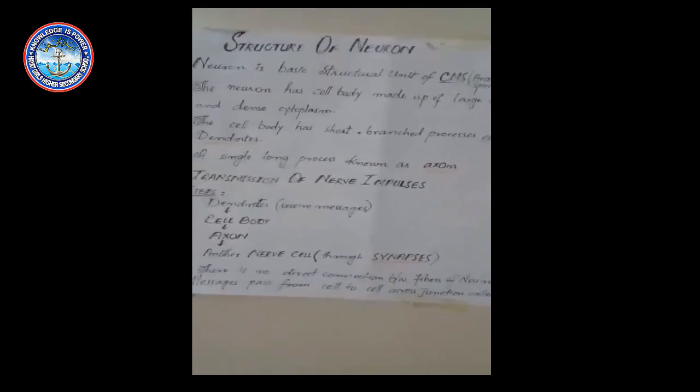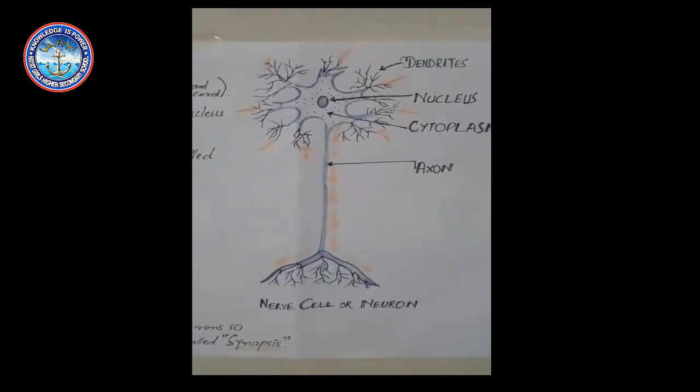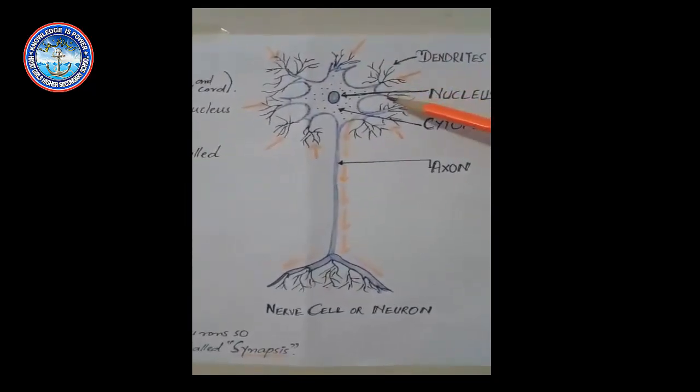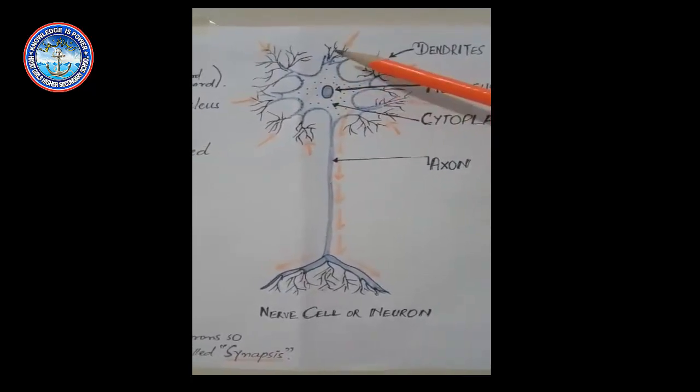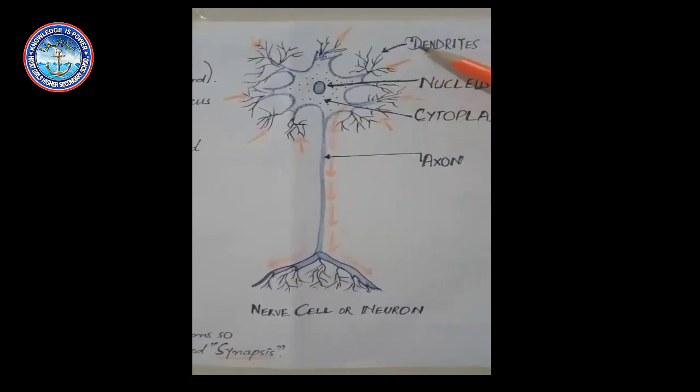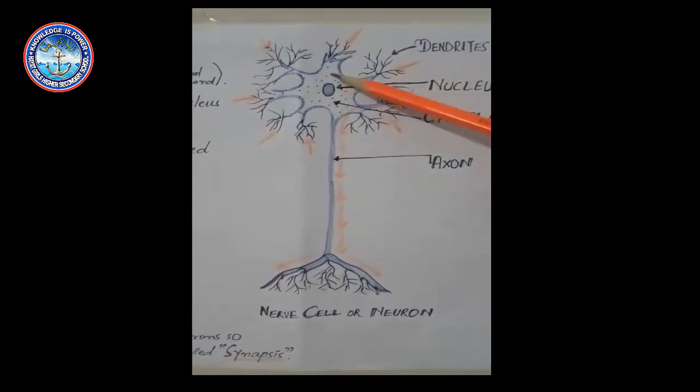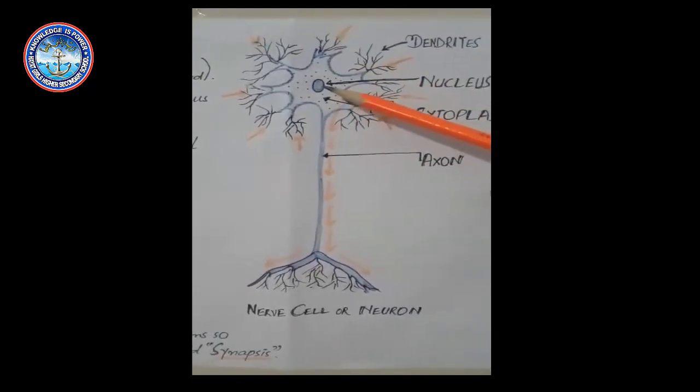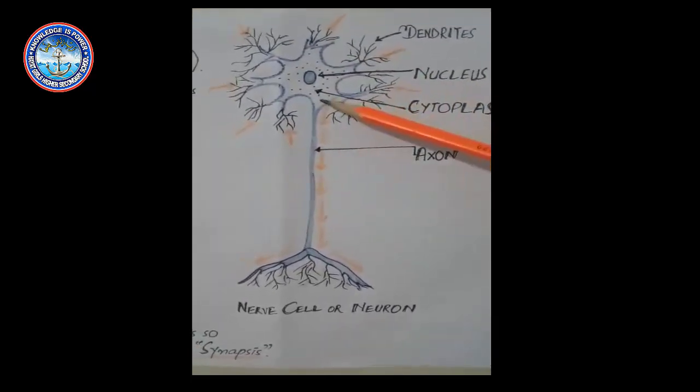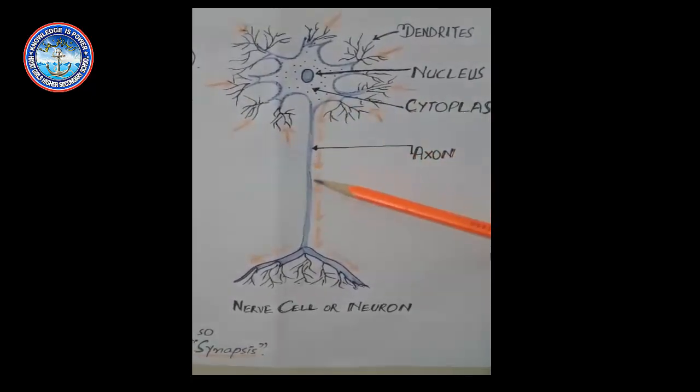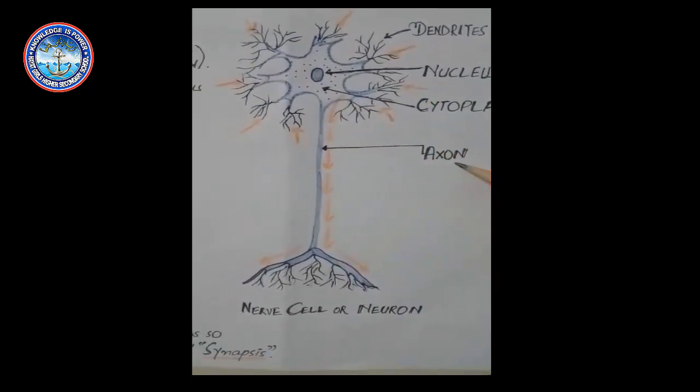Here is the diagram of a simple neuron structure that contains the minute branch processes called dendrites, internal cytoplasm, the central one that is the nucleus, and a long single process that is considered as the axon.